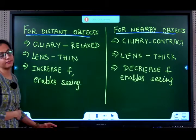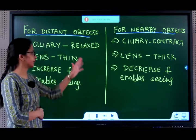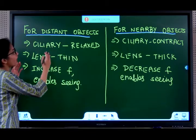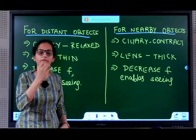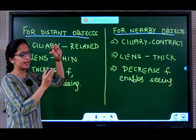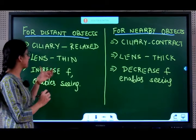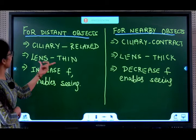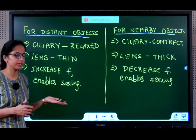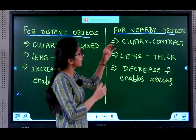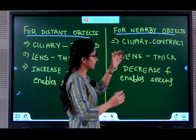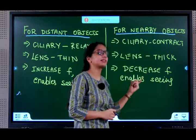We know power of accommodation of the eye means we have to keep changing the focal length. For distant objects, the ciliary muscles are relaxed — which means the lens is thin and the focal length is more, enabling us to see far-away objects. For nearby objects, the lens has to become fat — so ciliary muscles contract, lens thickens, and focal length decreases, enabling us to see nearby objects.